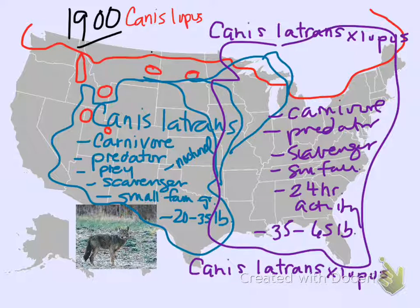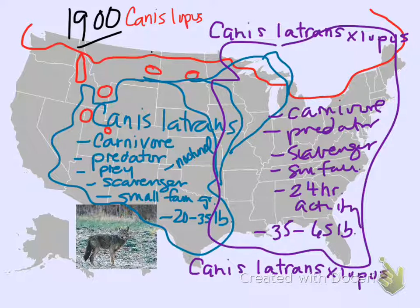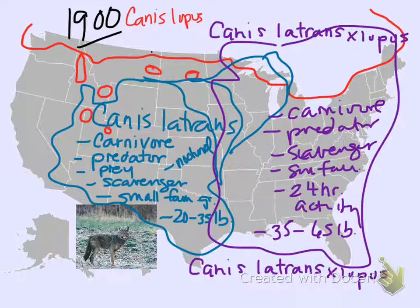When two species are closely related enough, what can happen is a coyote and a wolf breed. That hybrid offspring — which might not be fertile with another hybrid — breeds back to a coyote and is fertile, now carrying some wolf genes back into the coyote population. The name Canis latrans ex lupus suggests they probably have more coyote DNA than wolf DNA. But they've got wolf genes in there, and that gives them some advantages — they took over a whole lot of territory.